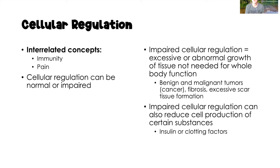Impaired cellular regulation can also reduce cell production. For example, with insulin: type 1 diabetics have no production of insulin, and type 2 diabetics have a reduced production of insulin — both are examples of impaired cellular regulation. We can also have clotting issues in which our clotting factors are impaired, which is also cellular regulation.